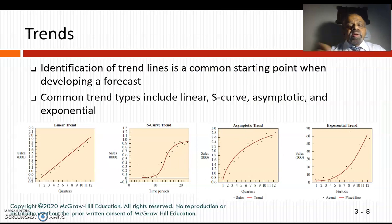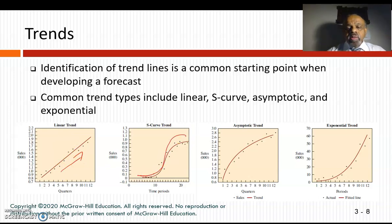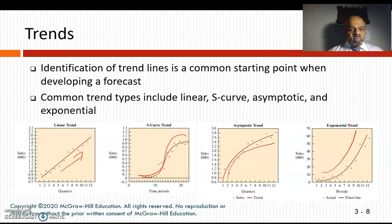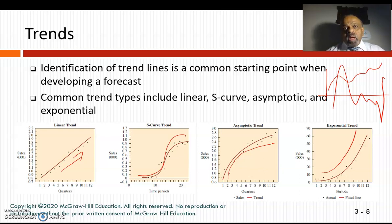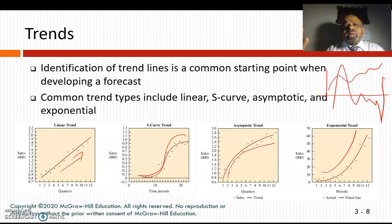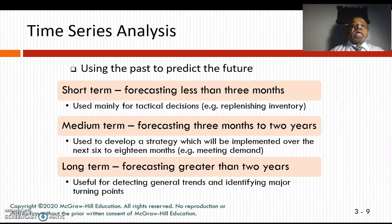Trends can take different forms: a linear straight line, an S-curve, an asymptotic trend, or an expansion. Trends can also be non-linear — a squared function or a multivariate function. However, right now we are not going to focus on trends; we are focusing only on the seasonal component.